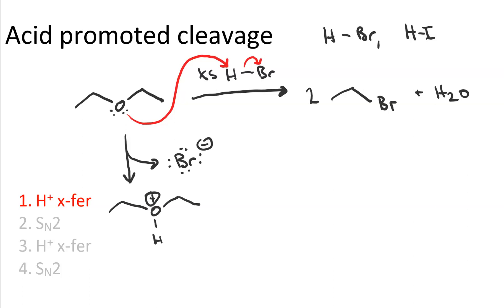This protonated ether, rather, this alcohol is now a good leaving group. In the second step the bromide ion does SN2 attack on the alpha carbon and an alcohol leaves. This produces one of our equivalents of ethyl bromide plus ethanol.